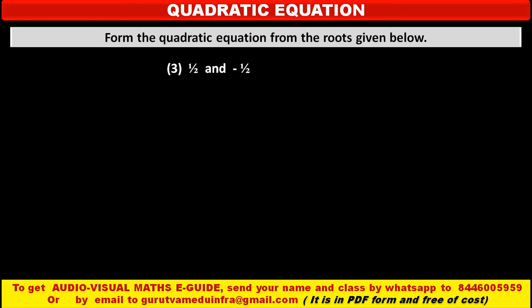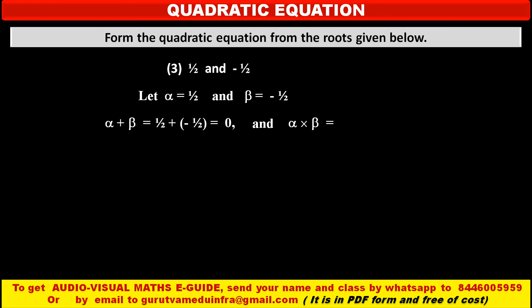Now, the third pair of given roots is 1 upon 2 and minus 1 upon 2. Let alpha equal 1/2 and beta equal minus 1/2. Sum of the roots, alpha plus beta, equals 1/2 plus minus 1/2, which is equal to 0. Product of the roots, alpha into beta, equals 1/2 into minus 1/2, which is equal to minus 1 upon 4.